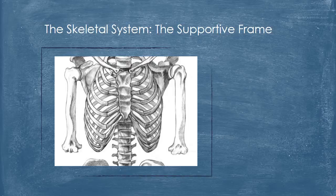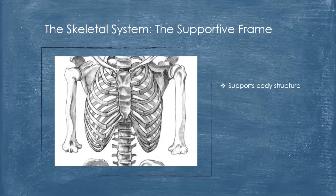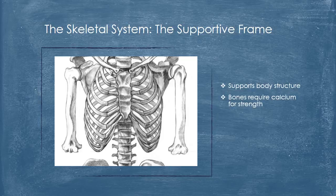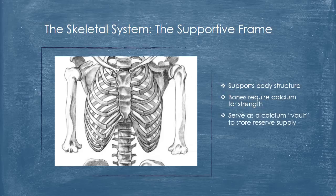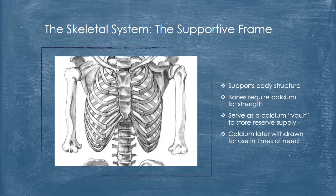Perhaps the body's most important system for obvious reasons, the skeletal system supports the structure of the entire body. Made of bones, these basic structural units require calcium for strength. While it is widely known that calcium helps build strong bones and teeth, bones additionally serve as a sort of vault to store surplus — excess calcium can be stored in the bones much like a bank vault and withdrawn later for use in times of need.